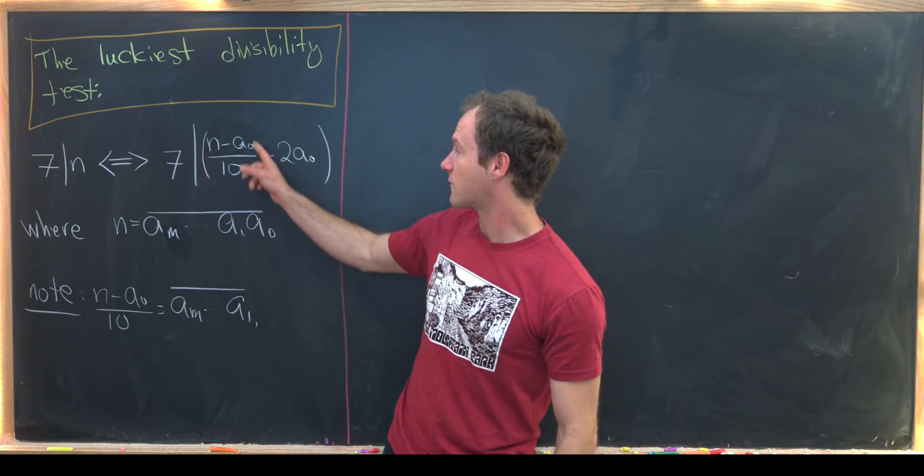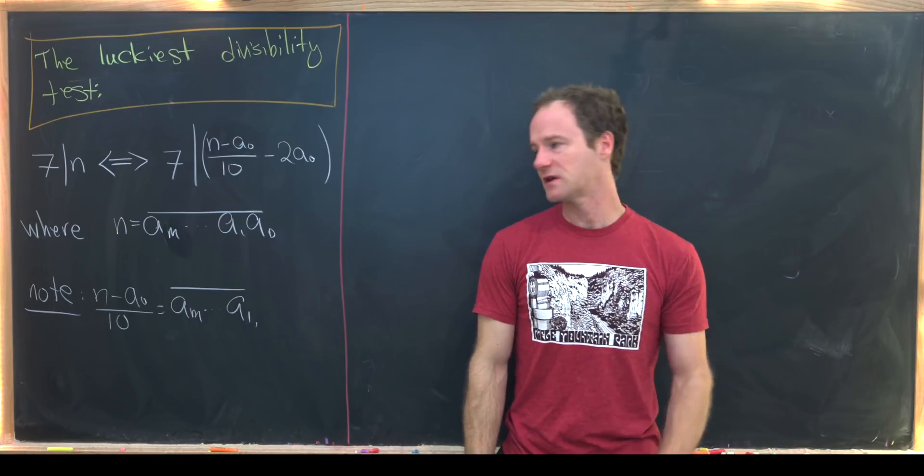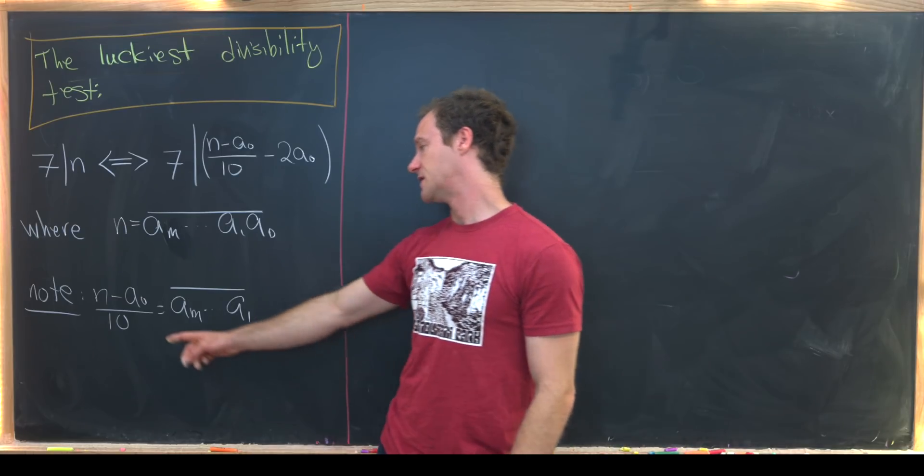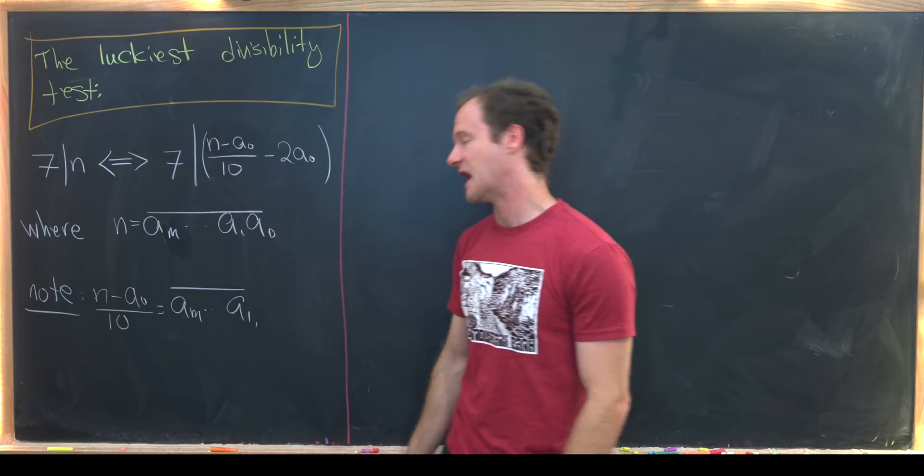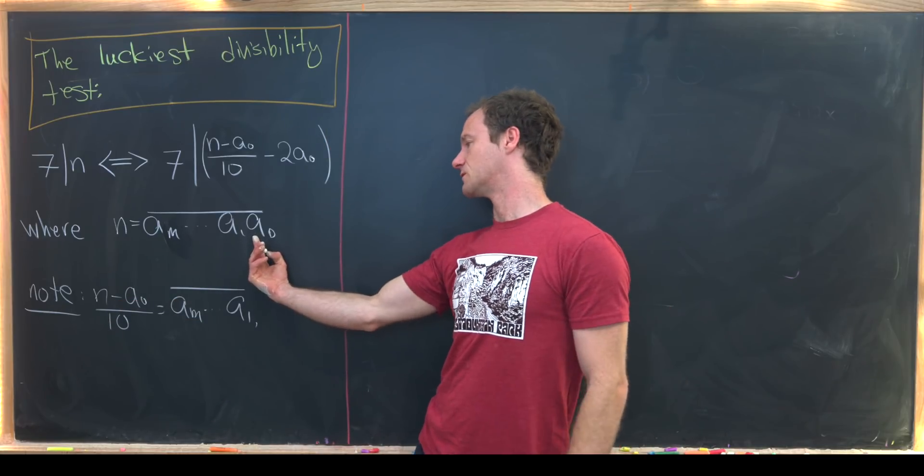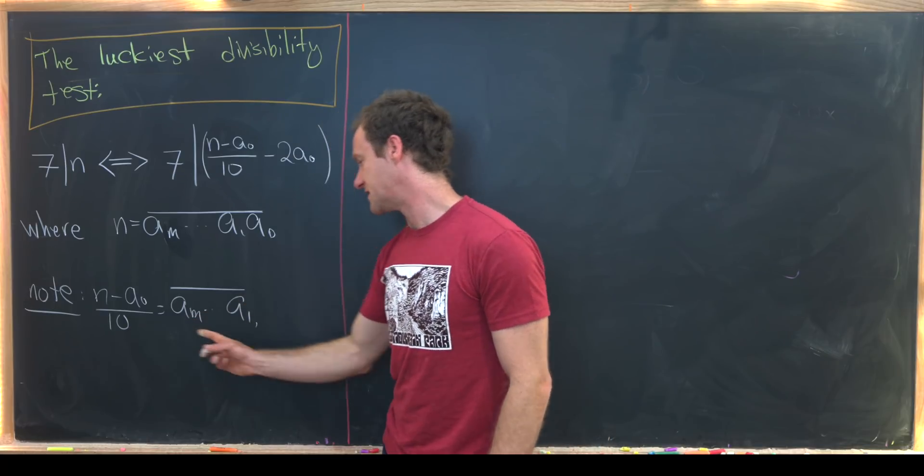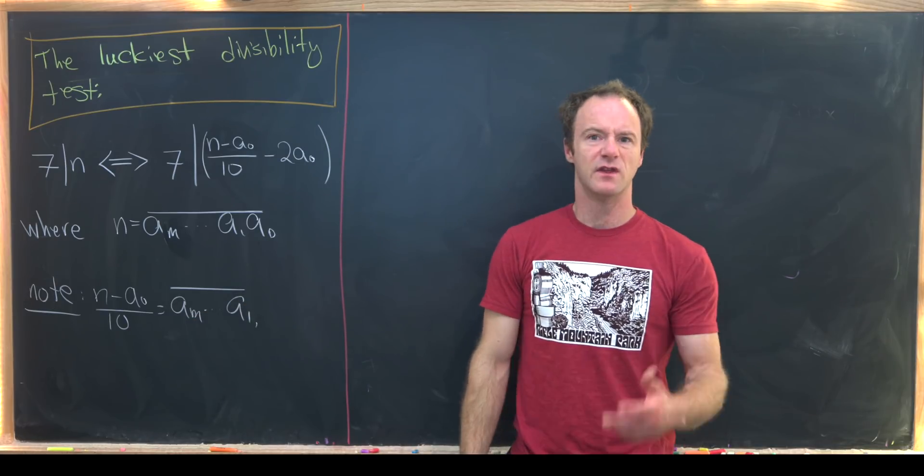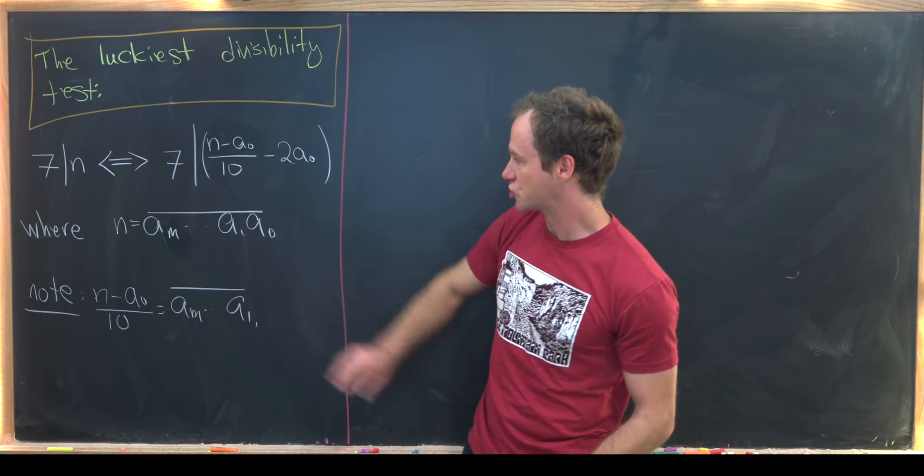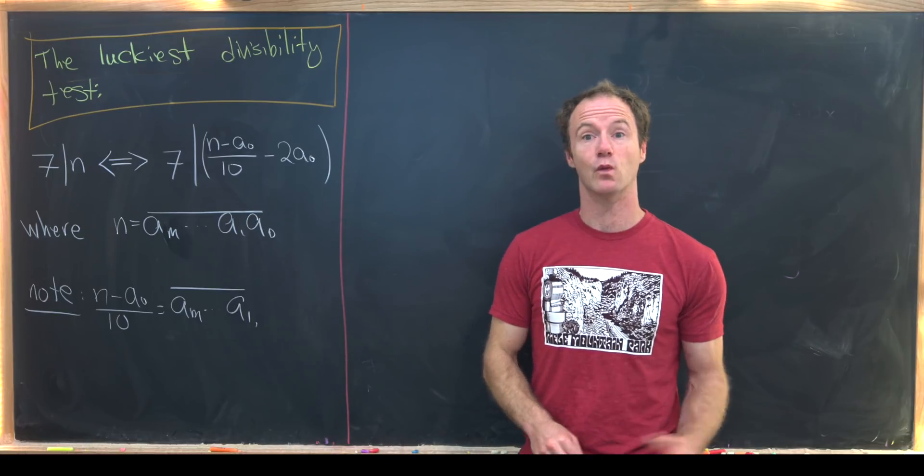Then our fraction here which could be a little bit problematic is not problematic because notice if we take n minus a naught that just puts a zero right here which means we can divide by 10 and we're left with the number that we get after just truncating off that ones digit.